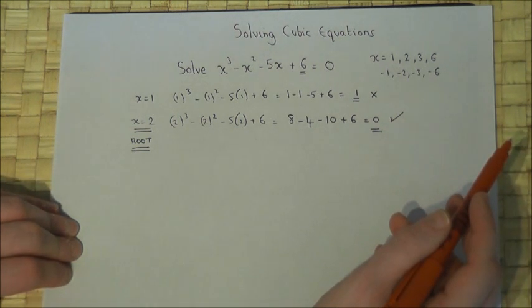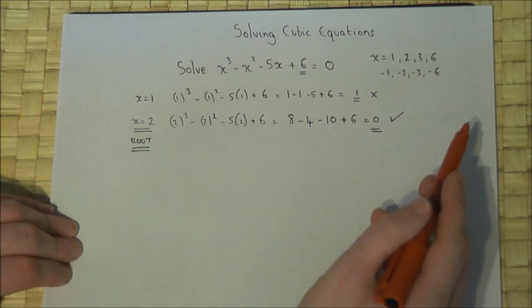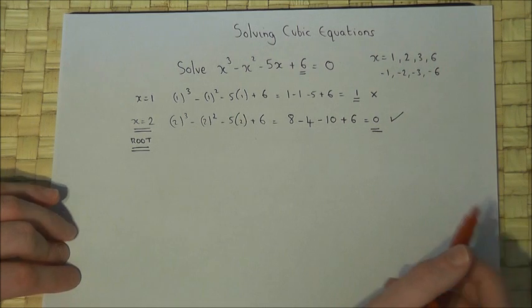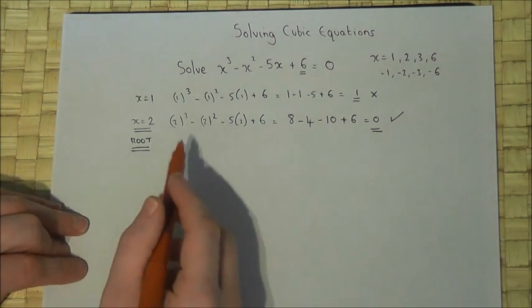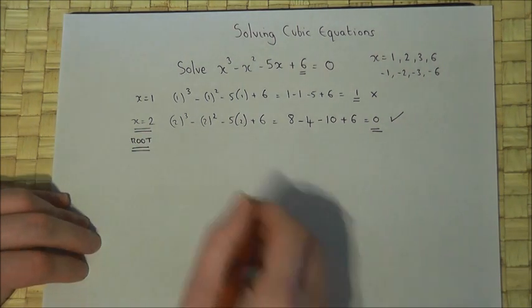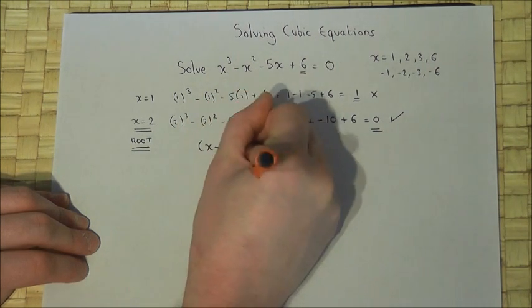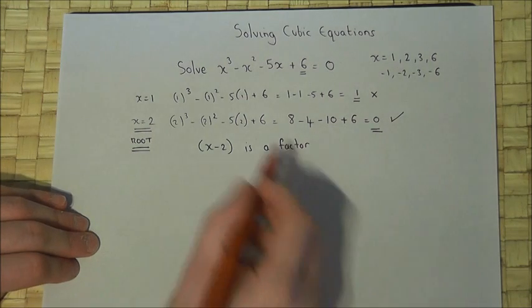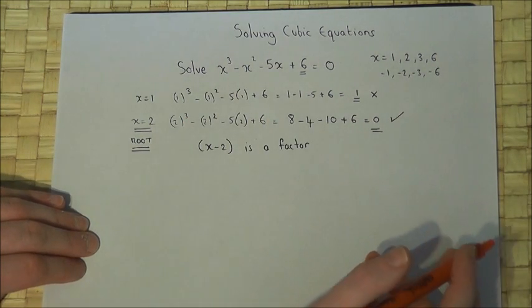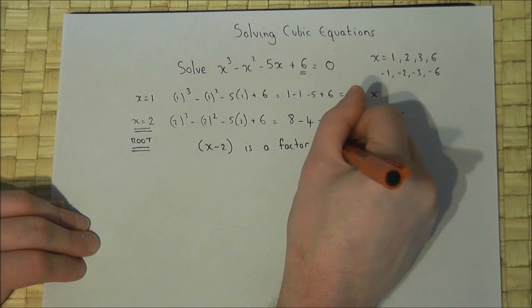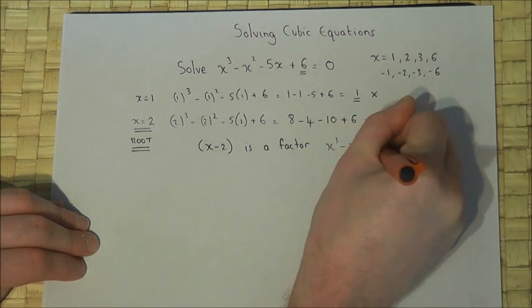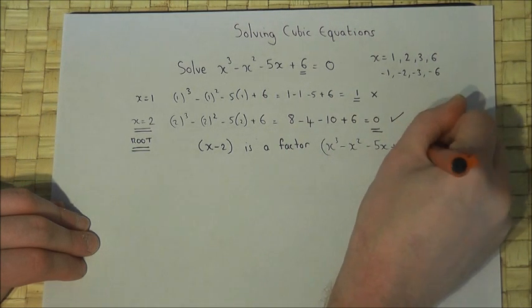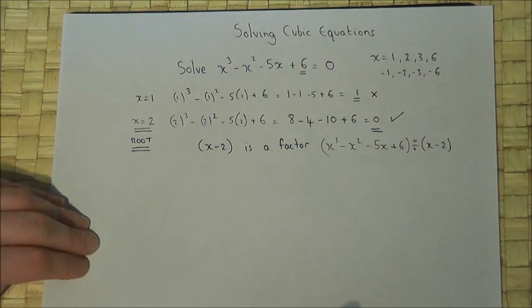So to find the other roots, the best method is to try to factorise as per the previous example. Right then, so if I know x equals 2 is a root, then I know that x minus 2 is a factor. So to find the other factor, I divide this by x minus 2. So I need to work out x cubed take x squared, take 5x plus 6, divide by x take away 2.